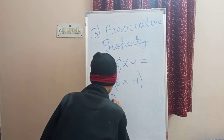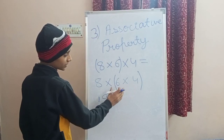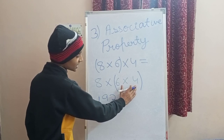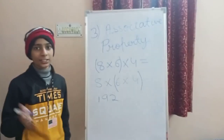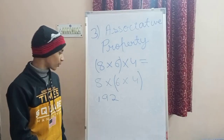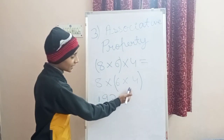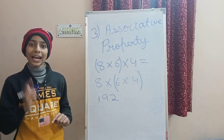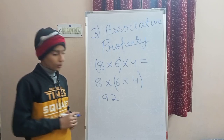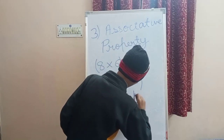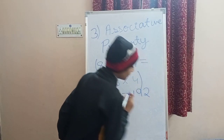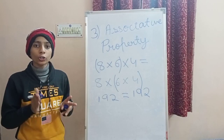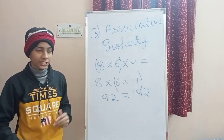Now we solve the other grouping — the bracket is 6 into 4. So 6 into 4 is 24, and then 24 into 8 becomes 192. Both sides are equal, which means associative property also holds on multiplication.